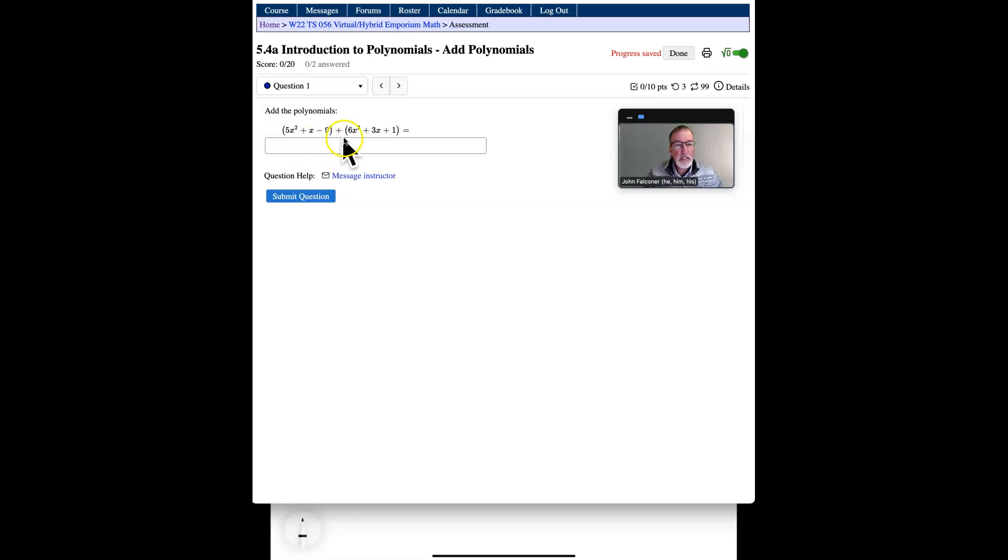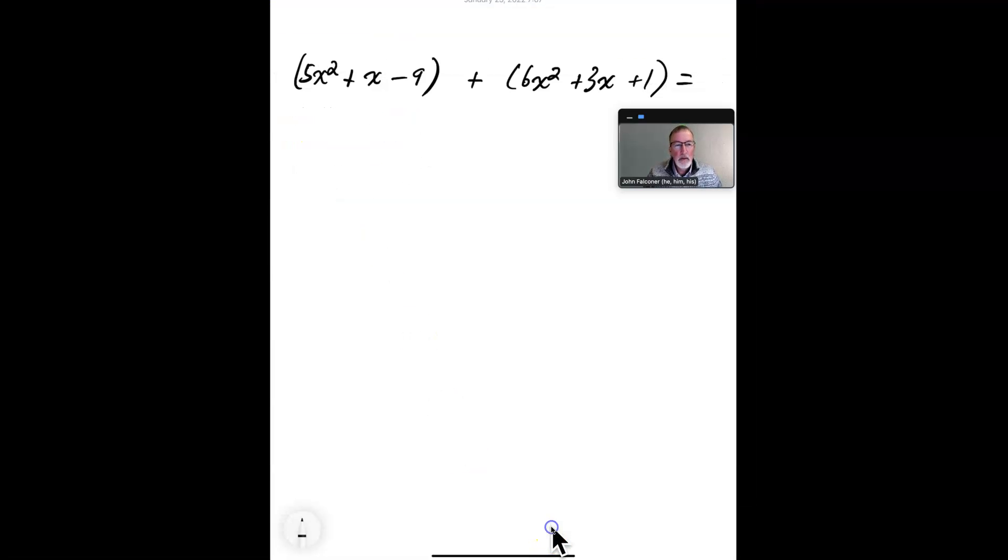We're going to take a look at this problem on the whiteboard, right here. And so, we've got 5x squared plus x minus 9 plus 6x squared plus 3x plus 1.